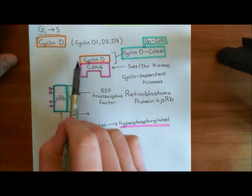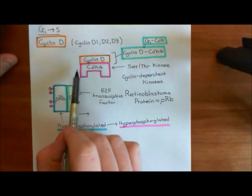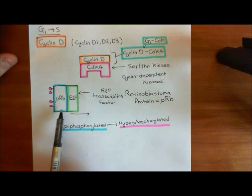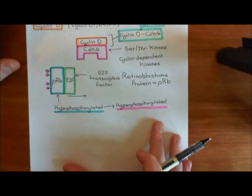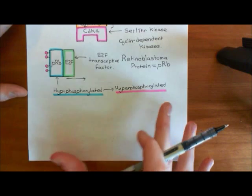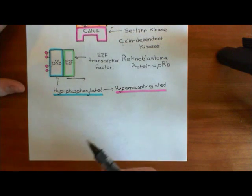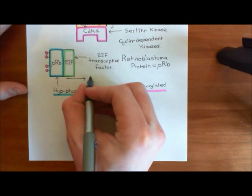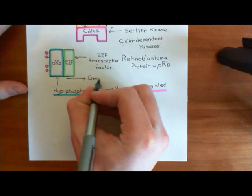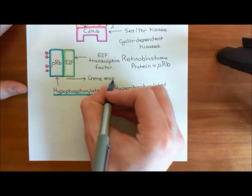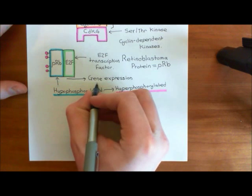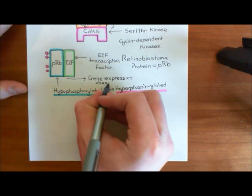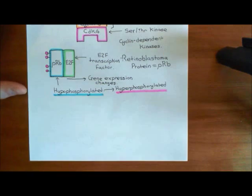Throughout G1, your cyclin D-CDK4 complexes are building in concentration. Once they reach a high enough concentration, retinoblastoma protein will be phosphorylated and will release the E2F transcription factors. These E2F transcription factors then bind the promoter regions of a huge number of different genes and cause changes in gene expression that take you from G1 phase to S phase, where you begin the replication of the DNA.